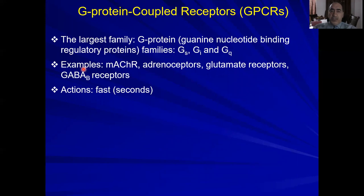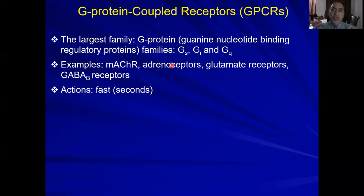Examples of G-protein coupled receptors include muscarinic acetylcholine receptors (since nicotinic receptors are ligand-gated ion channels), and all adrenergic receptors of the sympathetic nervous system — alpha-1, alpha-2, beta-1, beta-2, beta-3 — are all G-protein coupled receptors. Also, glutamate receptors and GABA-B are G-protein coupled receptors. Remember: GABA-A is a ligand-gated ion channel, while GABA-B is G-protein coupled. GPCRs are fast, but ligand-gated ion channels are the fastest.